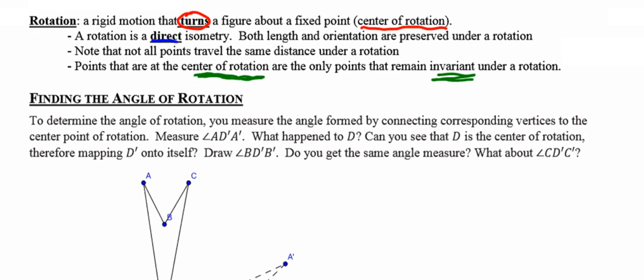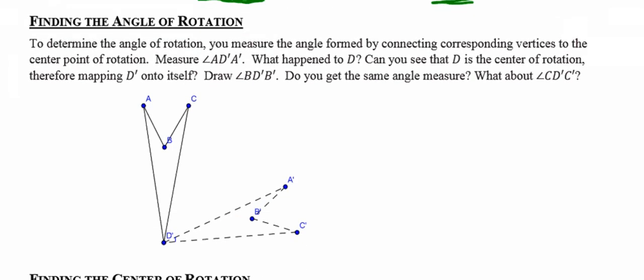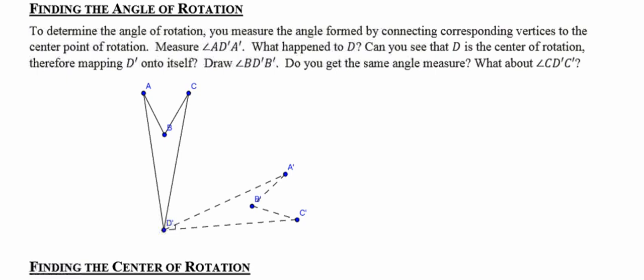So the first thing that we're going to do is we're going to determine the angle about which a figure is rotated. And in order to do that, let's go ahead and take a look at figure ABCD. And if you look at the picture, you can see the turn that's going on is ABCD is rotated to form the image A'B'C'D'.